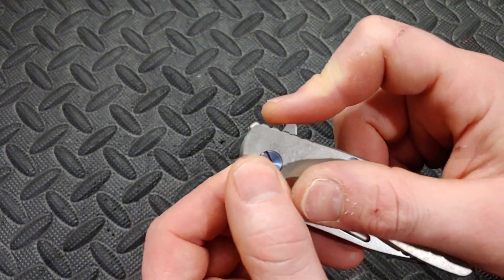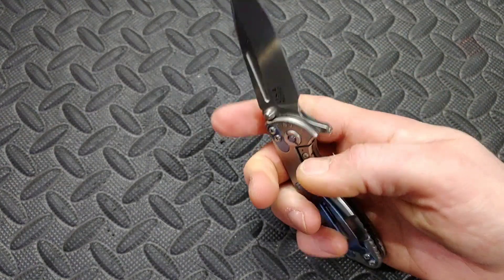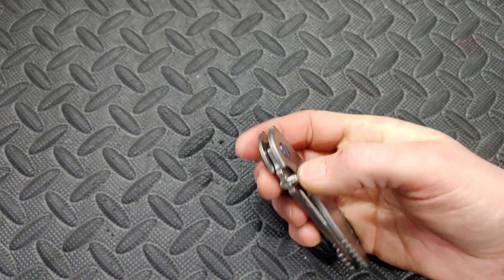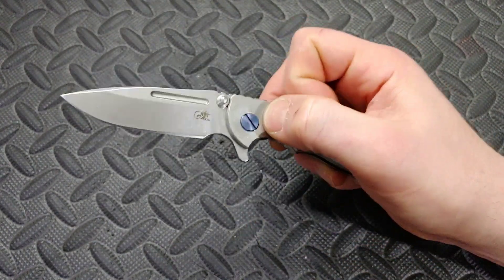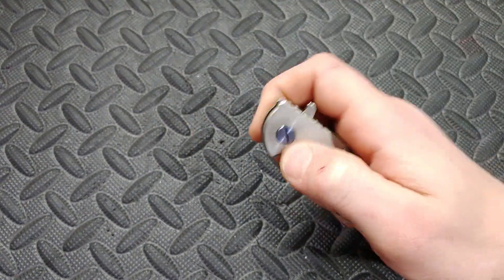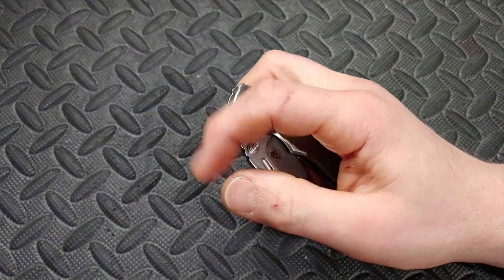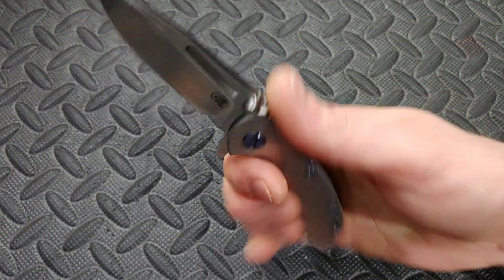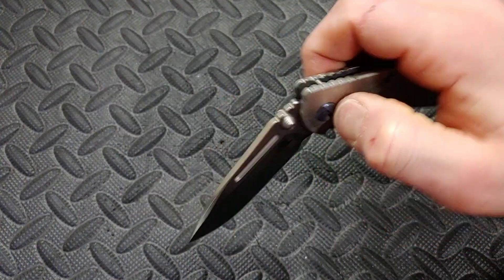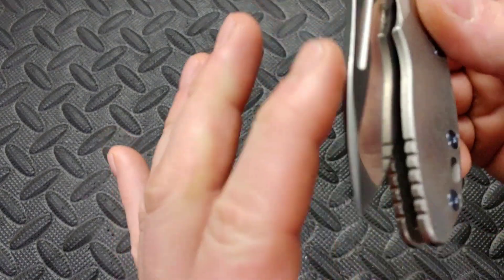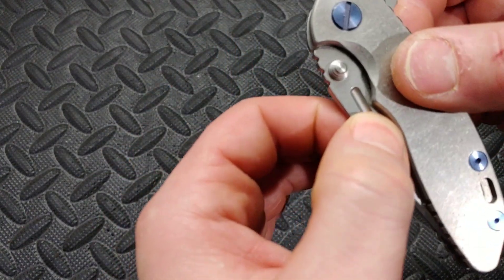But the Hinder also has kind of a pokey flipper tab so having a strong detent with a pokey flipper tab can be troublesome. In this case it still works out just fine but it does have a strong snappy detent. You can actually hear it when I pull it out.